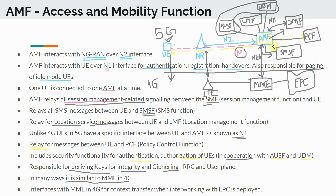Just keep in mind that the AMF can interact with the MME for fetching all the context of users as they move between 5G and 4G, and vice versa — if the subscriber moves back into 5G, the AMF can fetch the context from the MME using a similar process. That is AMF at a high level; we will go into more details in the next section.